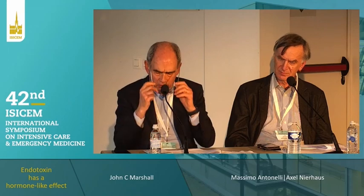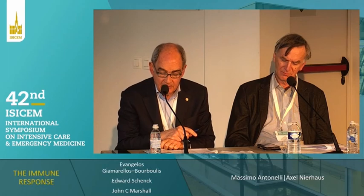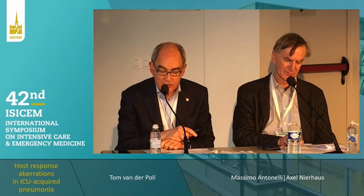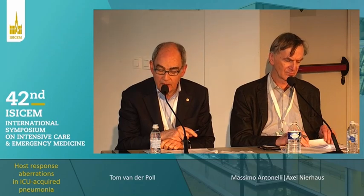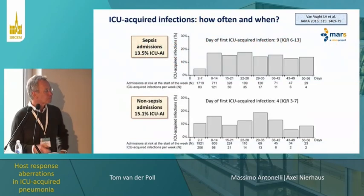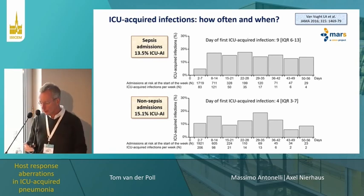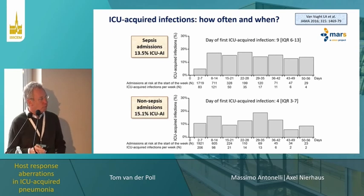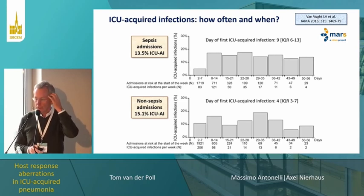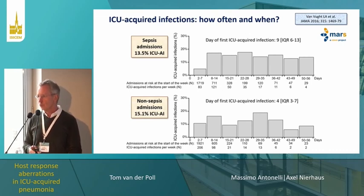We move on. Tom van der Poel from the University of Amsterdam will present the host response aberration in ICU-acquired pneumonia. Let's first define the problem. An ICU-acquired infection is a new infection occurring more than 48 hours after admission to the ICU. Data from the Netherlands from the MARS cohort showed that the frequency of ICU-acquired infections was 13.3% in the sepsis admission group and 15.1% in the non-sepsis admission group.